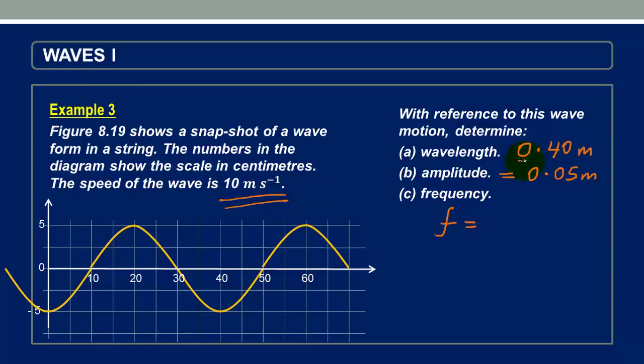We have just calculated the wavelength. We ask ourselves, how can we combine the physical quantities that we have already calculated with the ones which are provided in the question to get what we need? And the answer is straightforward. We remember that frequency is equal to speed divided by the wavelength. We've just been told that the speed is 10 meters per second, while the wavelength is 0.40 meters.